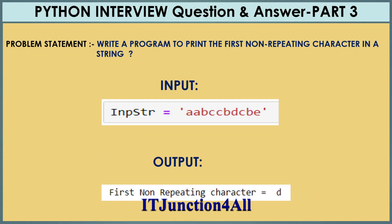Hello friends, this is Sunil and welcome back to my channel IT Junction for all. In this video I'm going to continue with Python interview question and answer series part 3. This question is very important and has been asked in an Amazon interview. It states: write a program to print the first non-repeating character in a string — that means we have to find a character which is unique and which comes first.